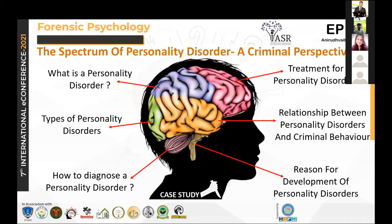What are the types of personality disorders? They are classified into three clusters based on similar characteristics and symptoms. The first is Cluster A personality disorders, which are suspicious in nature, characterized by odd or eccentric thinking or behavior. These include paranoid personality disorder, where the person has unjustified suspicion of others' loyalty and trustworthiness, a tendency to hold grudges, and recurring suspicion that their spouse is unfaithful.